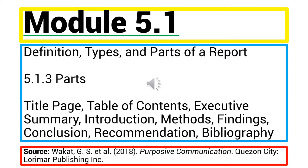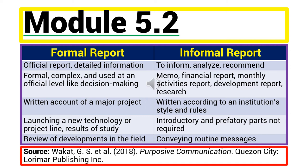The parts of a report are: title page, table of contents, executive summary, introduction, methods, findings, conclusion, recommendation, and bibliography. The characteristics of a formal report are: it is an official report, it contains detailed information, it is formal, complex, and used at an official level such as decision making, and it is a written account of a major project.